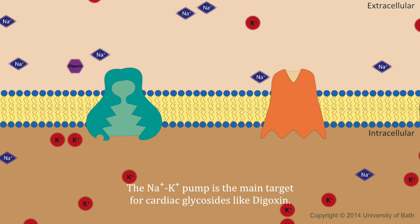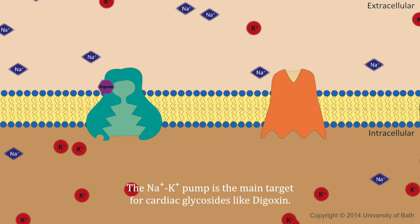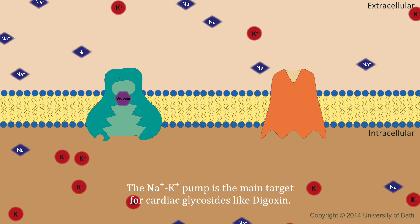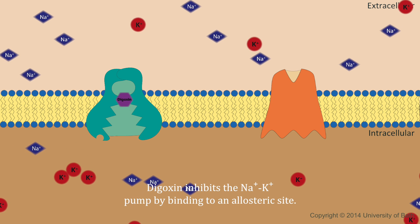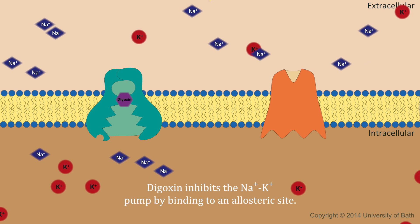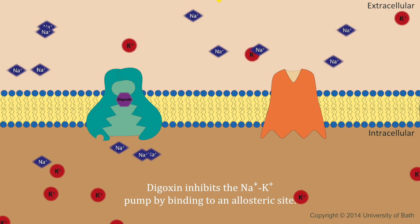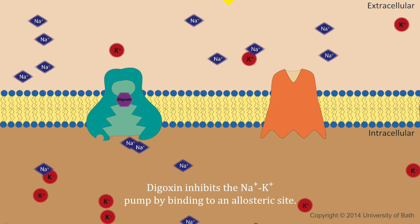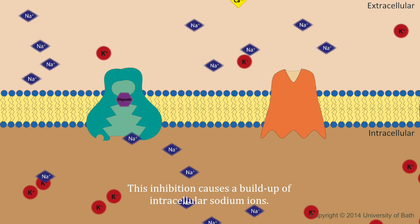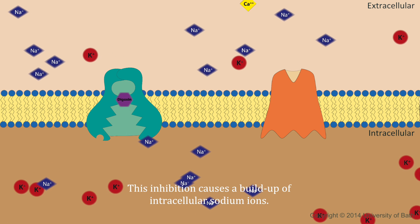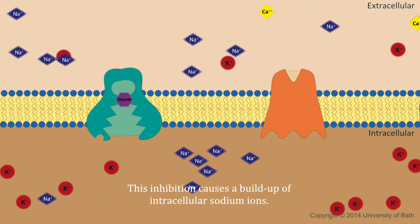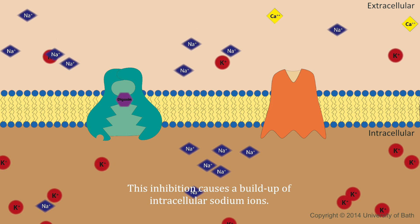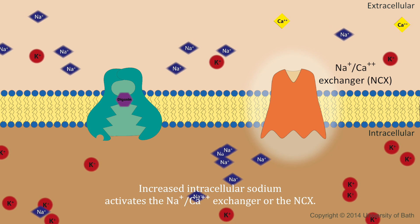The sodium-potassium pump is the main target for cardioglycosides, like digoxin. Digoxin inhibits the pump by binding to an allosteric site. This inhibition causes a buildup of intracellular sodium ions.